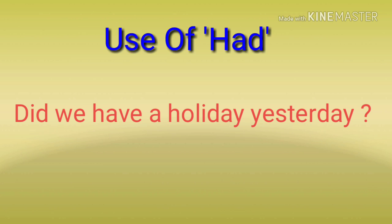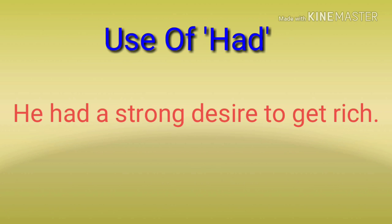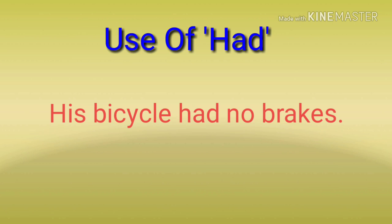Uske chehre pe muskaan thi — 'She had a smile on her face.' Uske amir hone ki tivra iccha thi — 'He had a strong desire to get rich.' Some negative sentences: uske cycle ko brakes nahi thi — 'His bicycle had no brakes.'